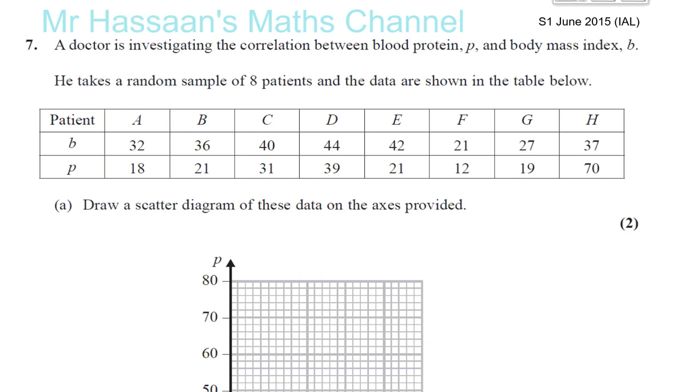Okay, question number seven from S1, June 2015 IAL paper. A doctor is investigating the correlation between blood protein P and body mass index B. He takes a random sample of eight patients and the data are shown in the table below.